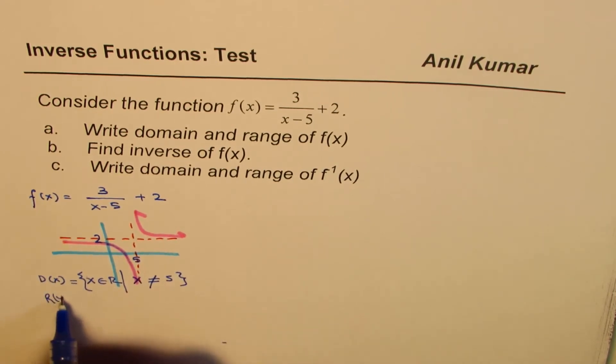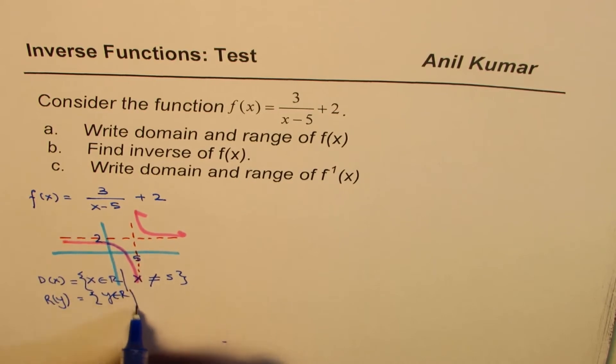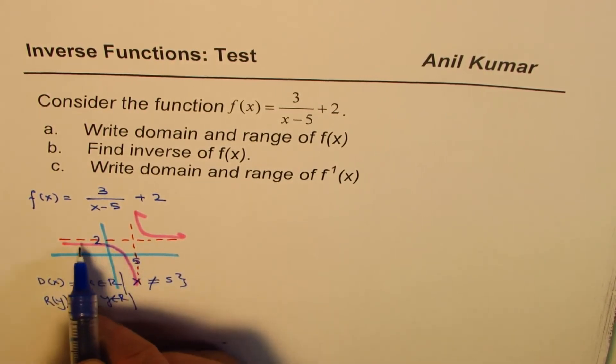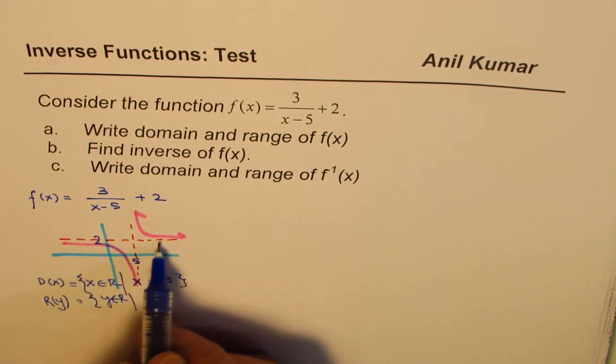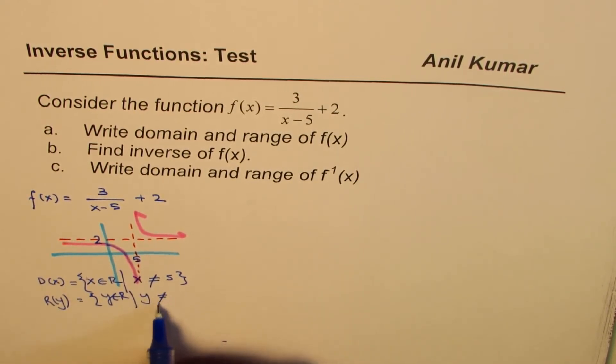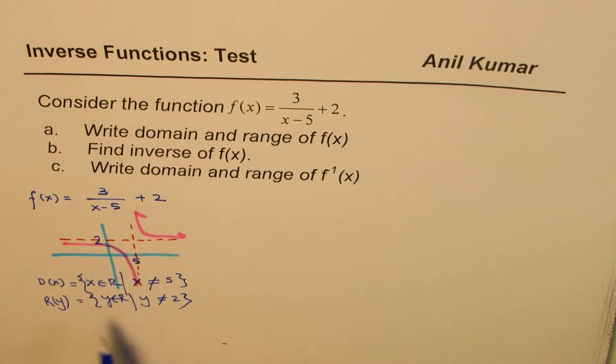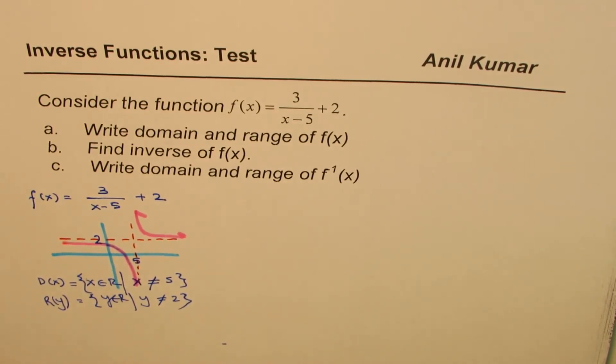As far as the range is concerned, the y values, y belongs to real numbers, and y will never approach 2, or will not be at 2. It will always just approach when at infinity. That's the horizontal asymptote. y is not equal to 2. So that becomes the domain and range of this particular function.